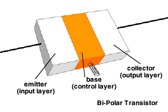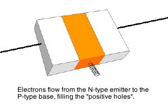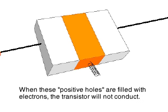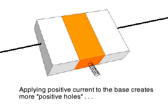When a current is applied to the emitter of an NPN transistor, electrons readily cross over to the P-type base, filling the electron holes. But when these holes are filled, the resulting negative charge repels further electrons that would come from the emitter. The transistor does not conduct.